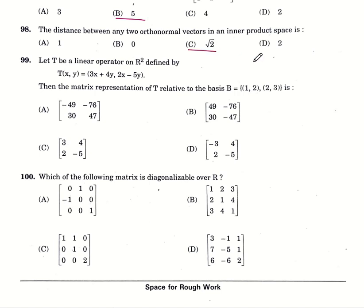99th question, let T be a linear operator on R square defined by given T, X, Y equals 3X plus 4Y, 2X minus 5Y. Then the matrix representation related to the basis is option number B. Finally, the last question, 100th question, which of the following matrix is diagonalizable? Option number B. Each correct response carries 2 marks. I hope you all cracked this paper. Kindly like, share and subscribe. All the best.